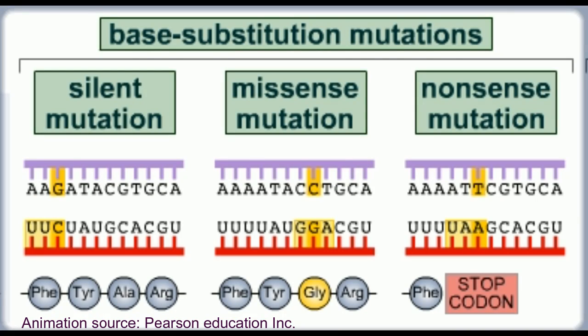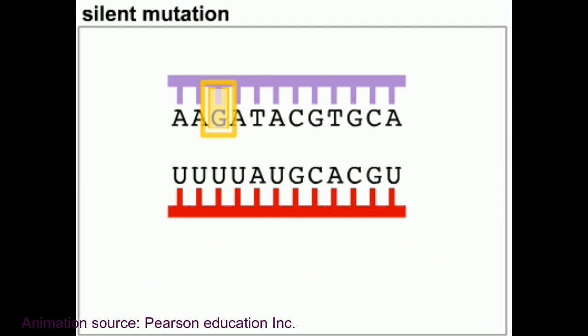Base substitution mutations can be further divided into silent mutations, missense mutations, and nonsense mutations. Now let's dig deep into each of these types of mutations. The base substitution produces no change in the amino acid sequence of the resulting protein.